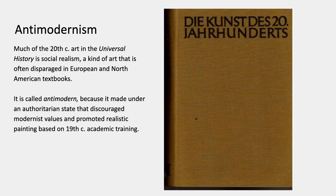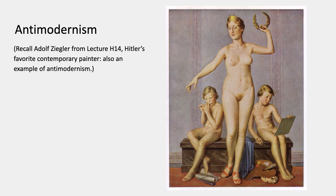Most of the art in the 20th century volumes is social realism, the kind often disparaged in North American textbooks. That kind of art is usually called anti-modern because it was made under an authoritarian state that discouraged modernist values and promoted realistic painting based on 19th century academic training. One example of anti-modern art is Adolf Ziegler, who I showed in Lecture 8, one of Hitler's favorite contemporary painters — idealizing and propagandistic.